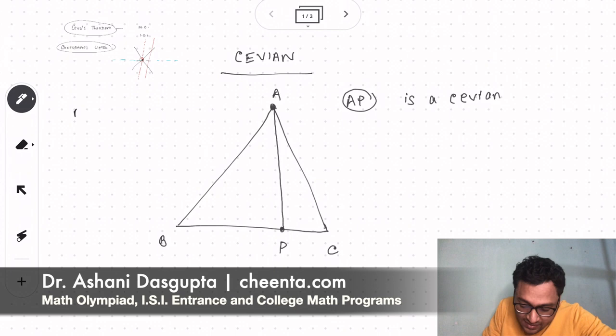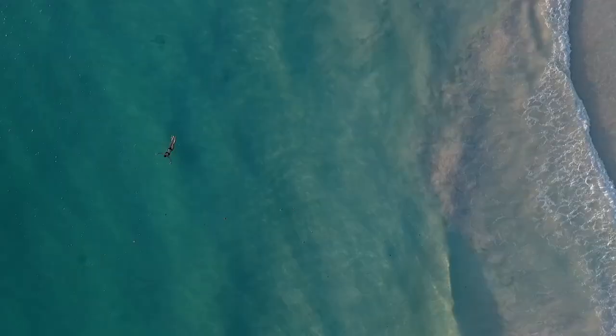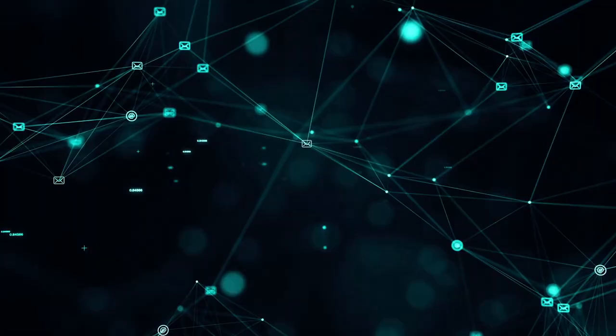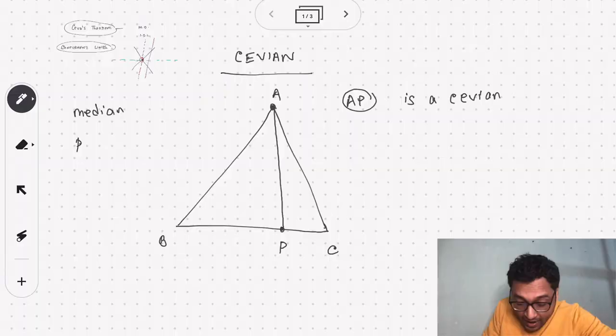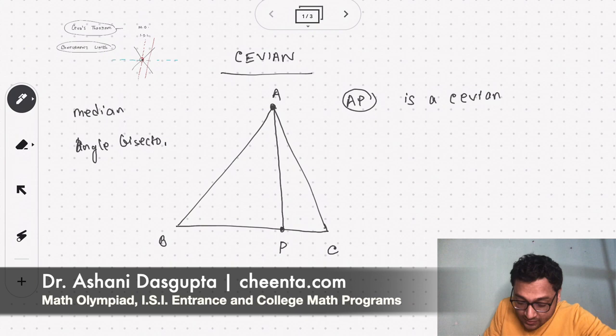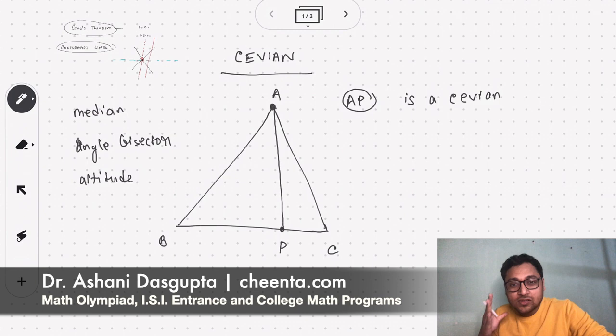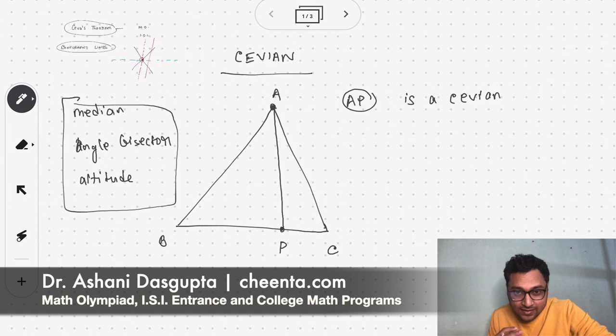So for example, median is a cevian, is a special cevian. Angle bisector, angle bisector, that's also a cevian. Similarly, altitude is a cevian. So we have all sorts of special examples of a cevian. So these are special examples, and the cevian is the general term we reserve for all such lines.